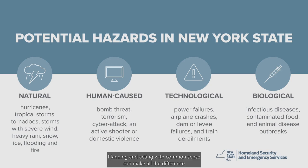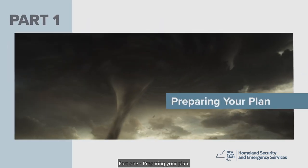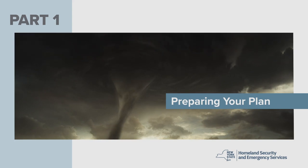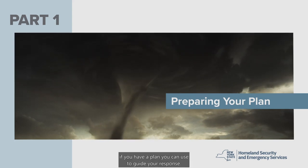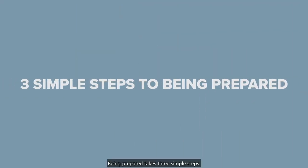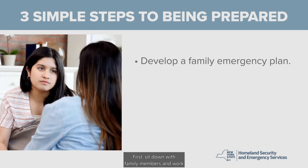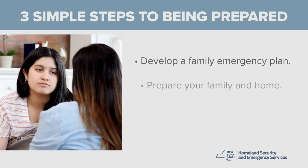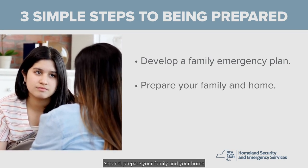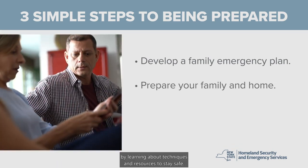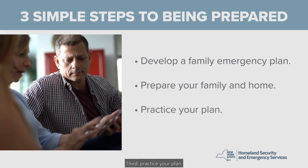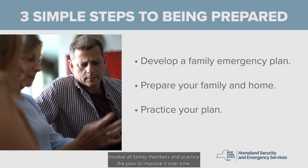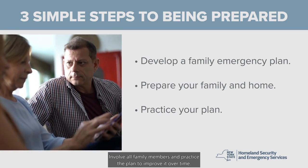Planning and acting with common sense can make all the difference in a dangerous situation. Part 1: Preparing Your Plan. During an emergency, it is always better if you have a plan you can use to guide your response. Being prepared takes three simple steps: First, sit down with family members and work together to develop a family emergency plan. Second, prepare your family and your home by learning about techniques and resources to stay safe. Third, practice your plan. Involve all family members and practice the plan to improve it over time.